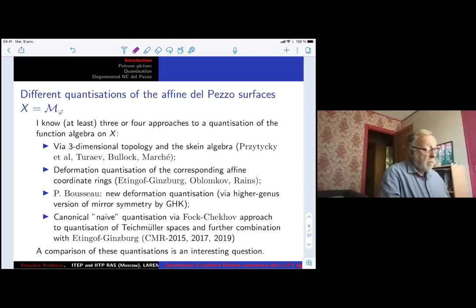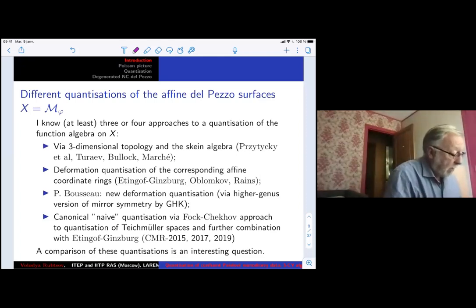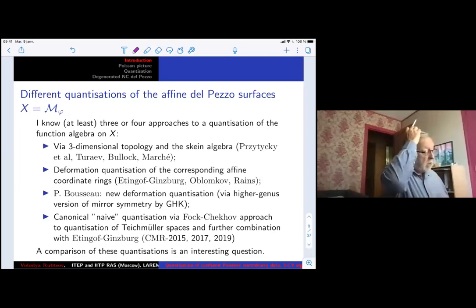First, I start with del Pezzo degree three, so with the character variety of six data manifold. This manifold, or more precisely functions on this manifold, they admit at least three, up to my knowledge, different type of quantization. The most old, I mean oldest of them, of course, which goes back to Vlodymyr Turaev, and also to Polish school of Przytycki and Sikora, and also other people, Baseilhac and Marché in France.